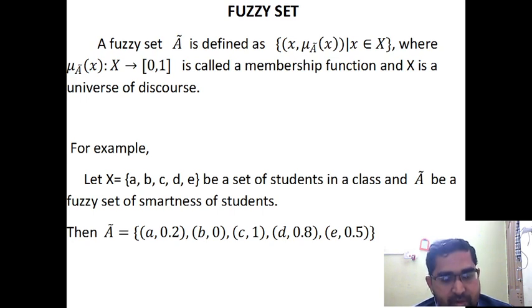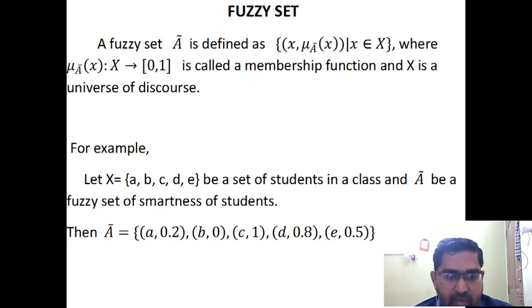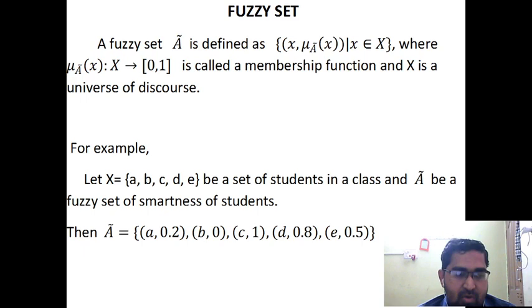So whenever this Fuzzy Set is based on, we say a linguistic term. What is the linguistic term? In this example, it is 'smartness.' We could not simply say they are smart or not smart. But generally, in any class, some students may be 20% smart, 80% smart, like that.